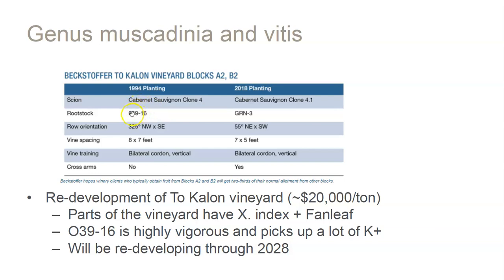Another reason for moving from O3916 to GRN3 is that O3916 is very vigorous, and GRN3 may be slightly less so. Also, O3916 picks up a lot of potassium, which is kind of an issue because it displaces hydrogen protons in solution — you can end up with high TA but also high pH. We don't want high pHs: wine can be microbially unstable at high pH, and things like color can also be unstable.